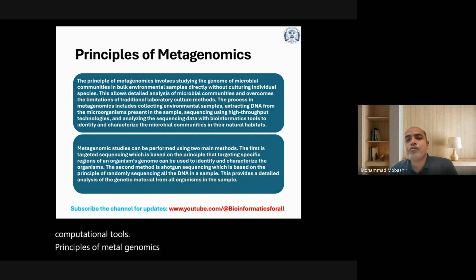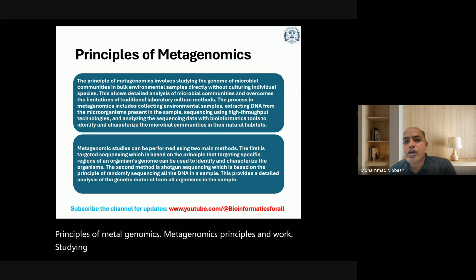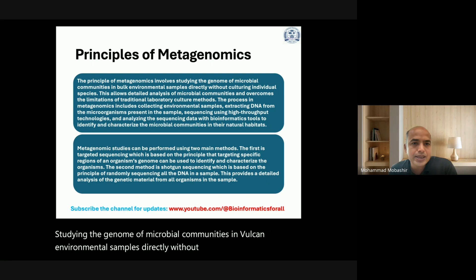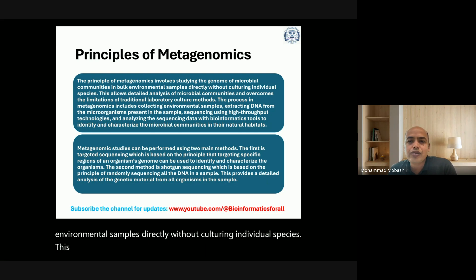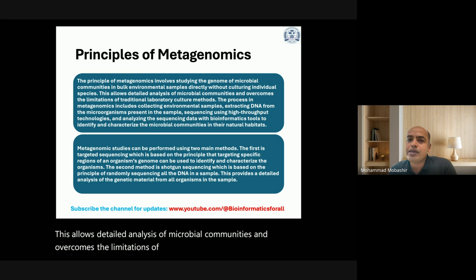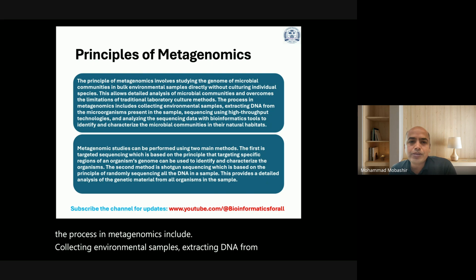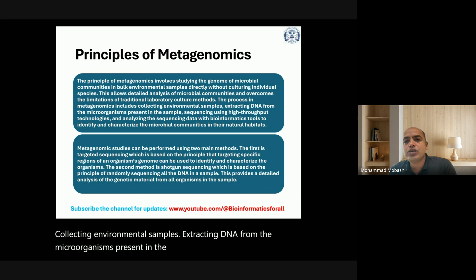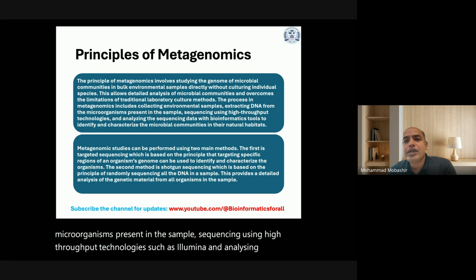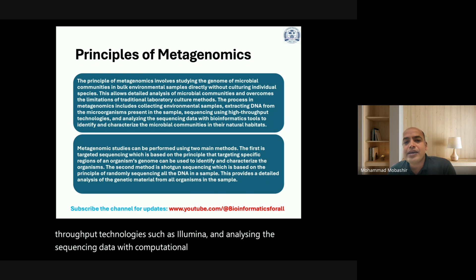The principles of metagenomics involve studying the genome of microbial communities in real environmental samples directly, without culturing individual species. This allows detailed analysis of microbial communities and overcomes the limitations of traditional laboratory culture methods. The process includes collecting environmental samples, extracting DNA from the microorganisms present, sequencing using high-throughput technologies such as Illumina, and analyzing the sequencing data with computational tools to identify and characterize microbial communities in their natural habitats.